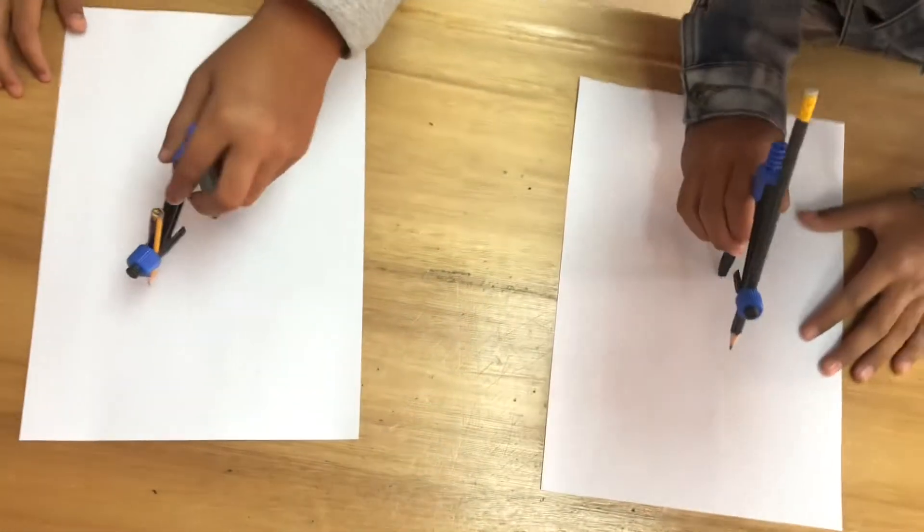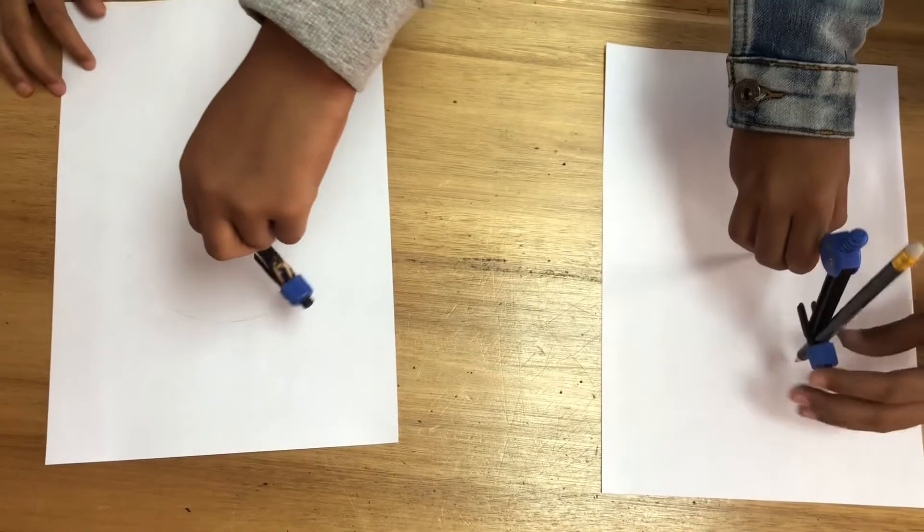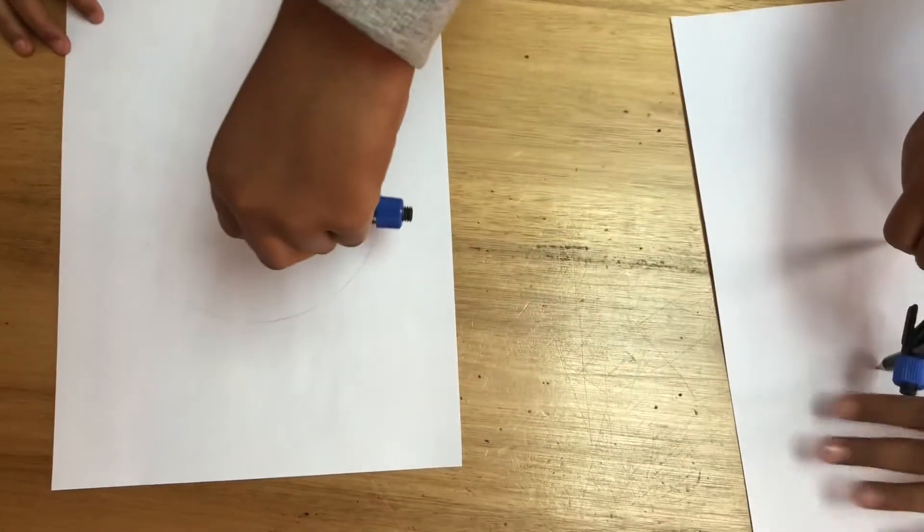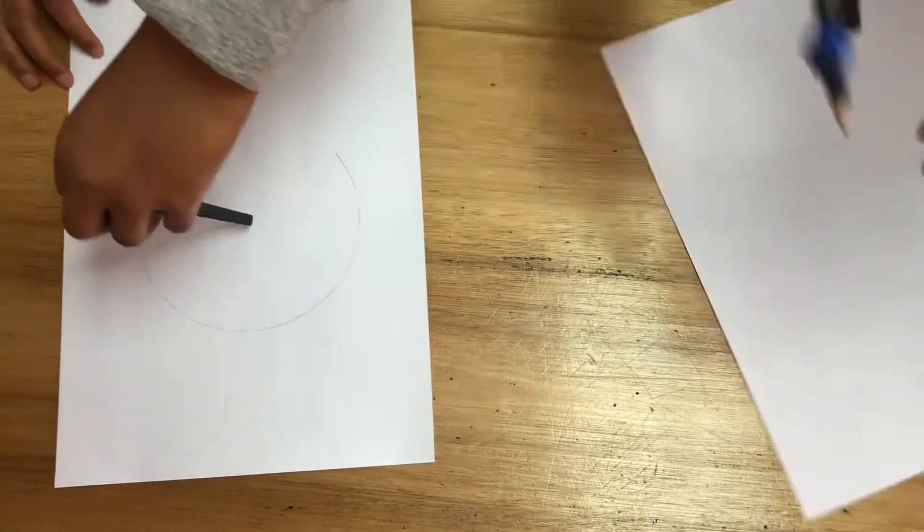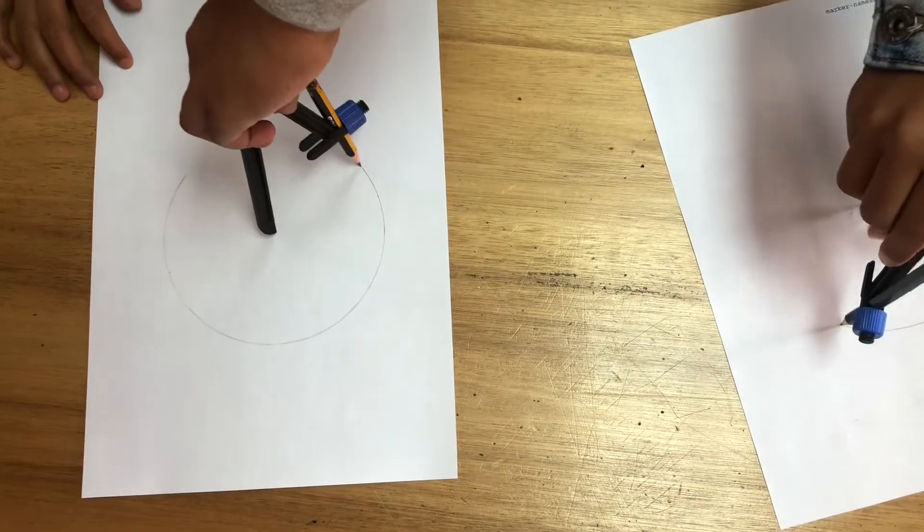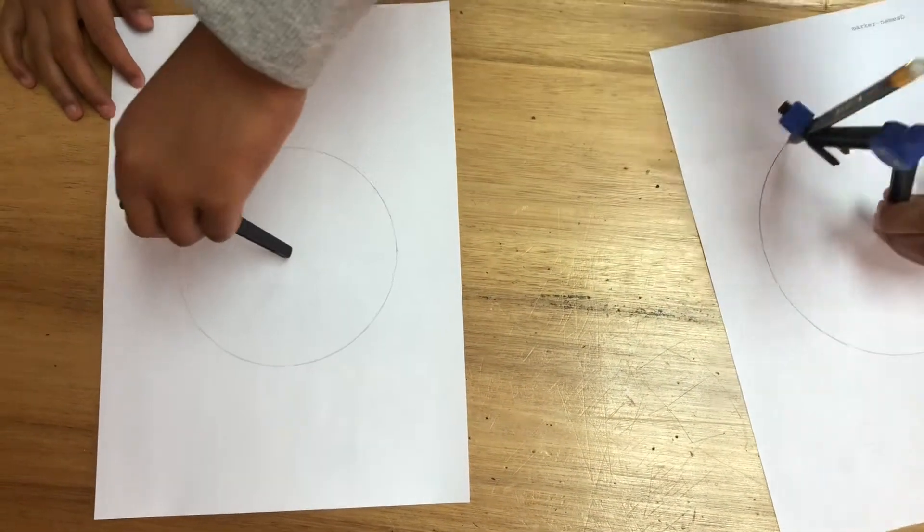Right, so let's go for it. So first you draw a circle. Okay. A circle. Yeah, you're spinning the paper and holding the compass in the same place. Sometimes that's easier to work. Yeah. Okay, so you've got a circle there.